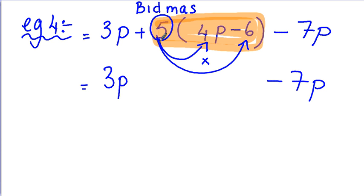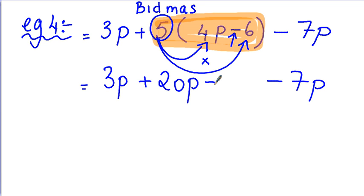The 5 here needs to be multiplied with the terms inside the bracket, one by one. So I do plus 5 times 4P: 5 times 4 is 20, and multiplying by P gives 20P. Next, inside the bracket there's a minus. The rule here is simple: a plus and a minus are two different signs, so the result is always a minus. Then I do 5 times 6, which equals 30, giving minus 30.